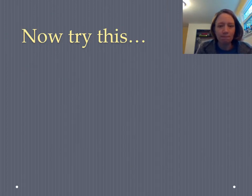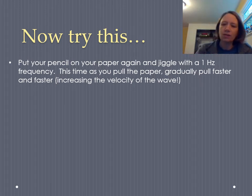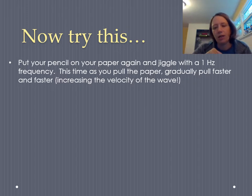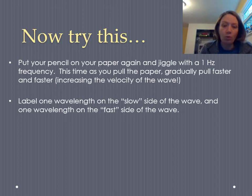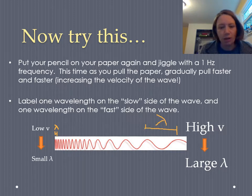Now let's do a second experiment. This time, put your pencil down again on your paper and jiggle with a one hertz frequency. But as you pull the paper, I want you to gradually be pulling faster and faster and faster. So this is like keeping the wave frequency constant, but increasing the velocity so the medium is changing somehow. And this time I like you to label one wavelength on the slow side and one on the fast side to see how they compare. So what you should see is at the left side of this picture, if you label wavelength here, it's a very small value, the distance between the crest and the next crest. Whereas when we're moving with a high velocity, the wavelength should be a big value.